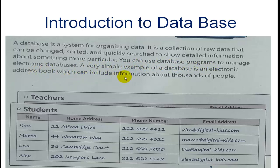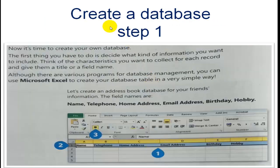An electronic address book can include information about thousands of people. Now it is time to create your own database. Step one: the first thing you have to do is decide what kind of information you want to include. Think of the characteristics you want to collect for each record and give them a title or a field name.